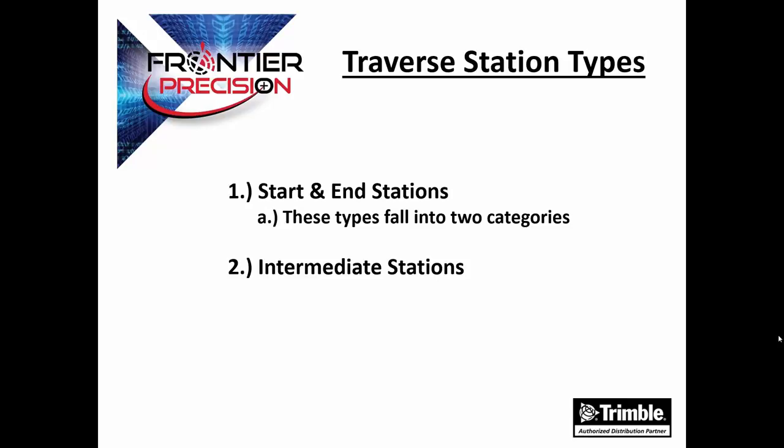Such stations serve as fixed input into the traverse adjustment and are not changed by the adjustment. The second category is a station setup, such as a station setup or station setup plus, that has been performed over a point for which the position was determined from the first or last intermediate station. The station backsights and foresights a point with a known position or azimuth. The station setup cannot be computed independently from the traverse, and this station will be adjusted by the traverse adjustment. Also note that when both the start and end stations are of this type, backsight and foresight points are the only known points, and every station in the traverse will be adjusted. This is the weakest type of traverse because it has the least amount of fixed information.